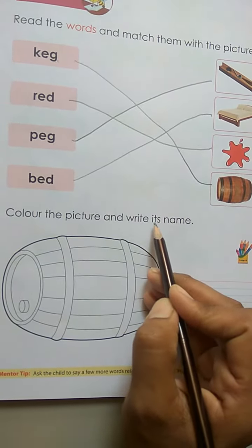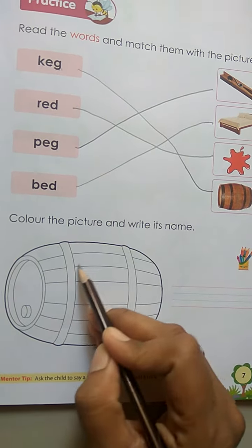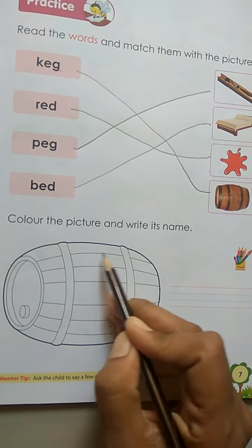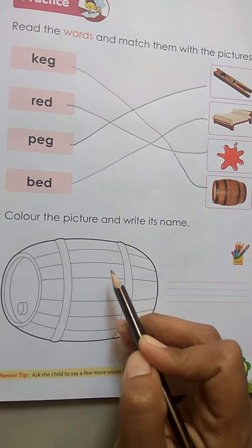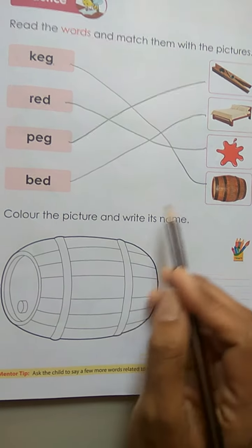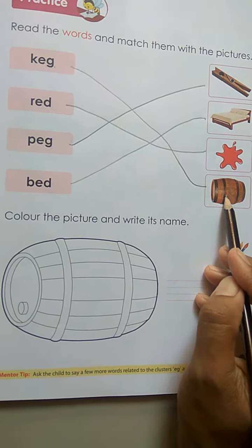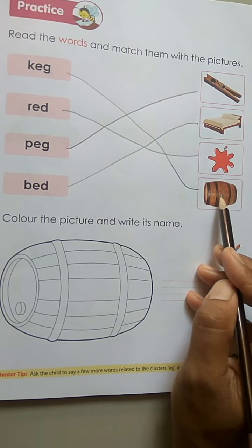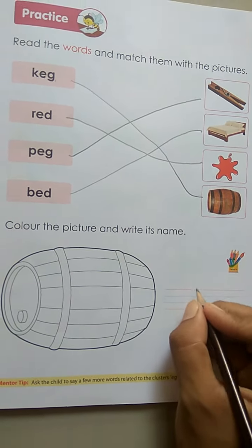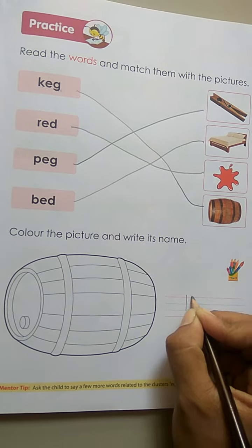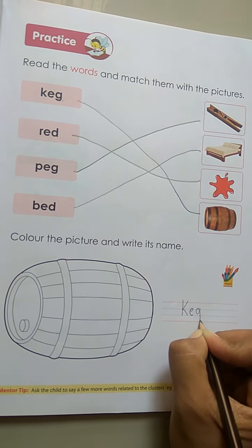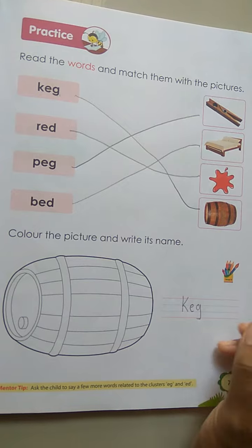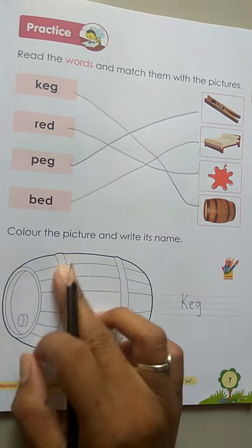Next, color the pictures and write its name. Which is this picture? K-E-G, keg. K-E-G, keg. So write down K-E-G, keg. Okay, and color it.